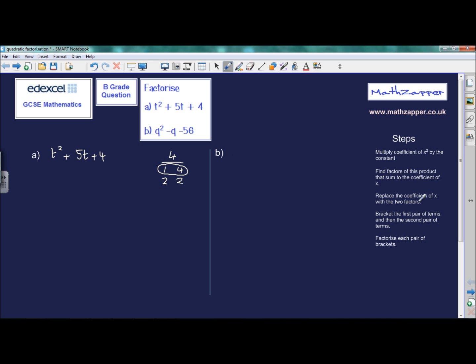Now, we have to replace the coefficient of x with the two factors. So we're going to replace 5 with 1t and 4t. So now this becomes t squared plus 1t, or we'll just write t, plus 4t and then plus 4 at the end.